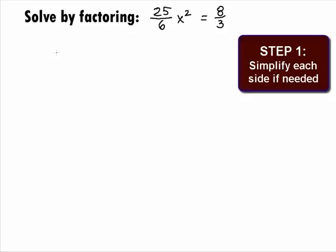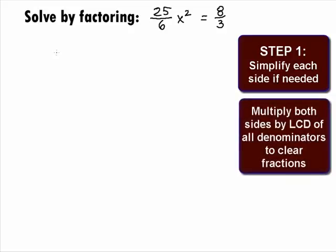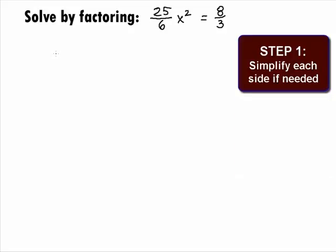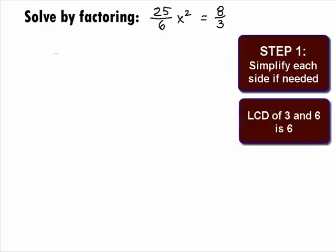It looks like we have some fractions that we can get rid of to make this problem simplified. We can do this by multiplying both sides by the least common denominator or LCD of all of the denominators. Since our denominators are 6 and 3, we are going to end up with an LCD of 6.